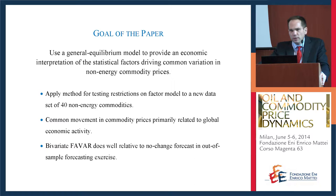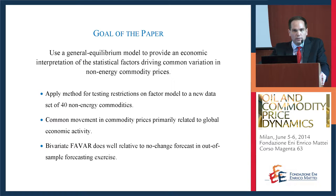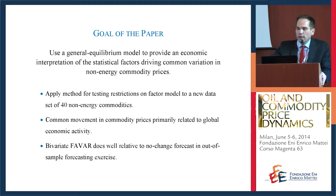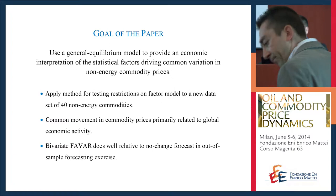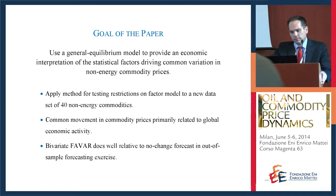What we wanted to do is use a simple general equilibrium model to provide an economic interpretation of the statistical factors that drive the common variation in non-energy commodity prices. We're not interested in commodity-specific shocks like a drought affecting wheat prices or a strike in Chilean copper mining. What we care about are the fundamental macroeconomic drivers of the common variation in a set of commodities. We collect a dataset of 40 non-energy commodities and apply a method for testing the restrictions on a factor model.